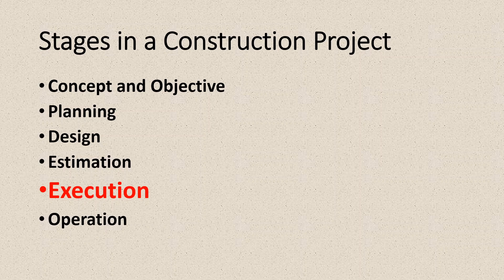Then comes operation — basically what happens after you complete the construction. For example, an airport is going to operate flights, a highway is going to carry vehicles, a building is going to be occupied by its residents. That part is called operation. The construction manager may still have some liabilities in this phase, for example maintenance or repairing of defects.